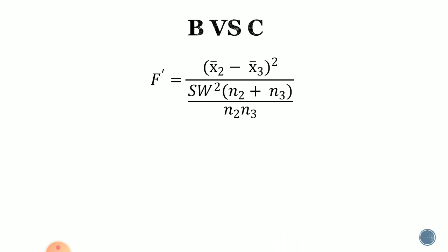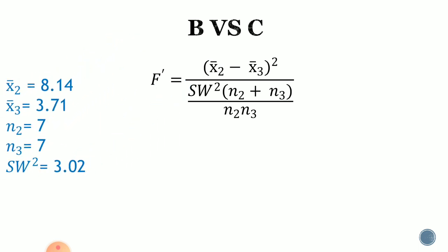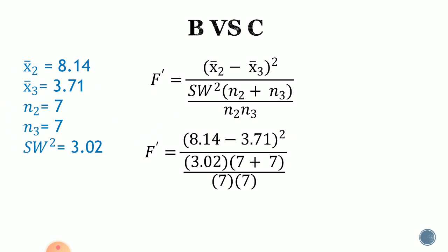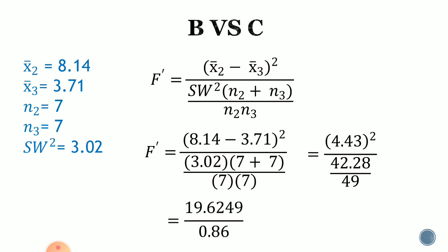Next is B versus C. The mean of group 2 is 8.14, and the mean of group 3 is 3.71. N sub 2 and N sub 3 are both 7, and SW squared equals 3.02. Substituting into the formula: the quantity 8.14 minus 3.71, squared, all over 3.02 times the quantity 7 plus 7, all over 7 times 7. That gives 4.43 squared over 42.28 over 49, equal to 19.6249 divided by 0.86, which equals 22.82.